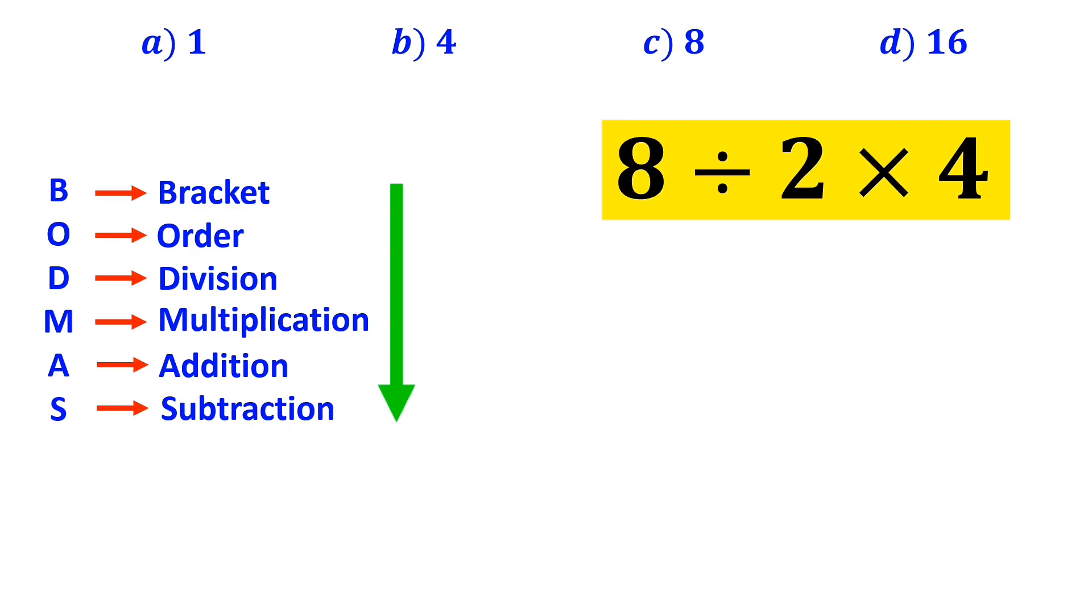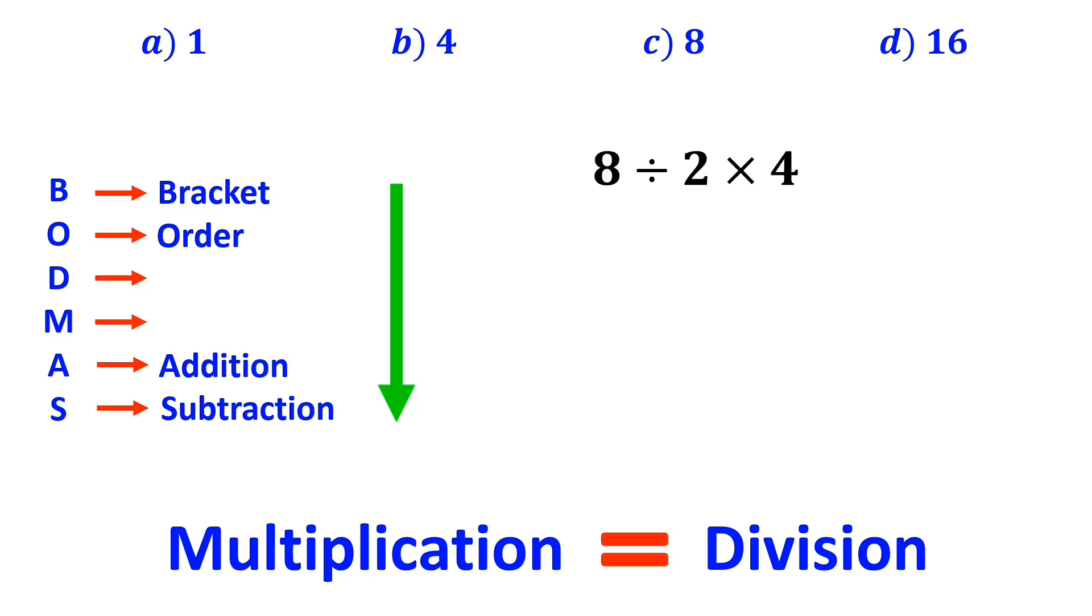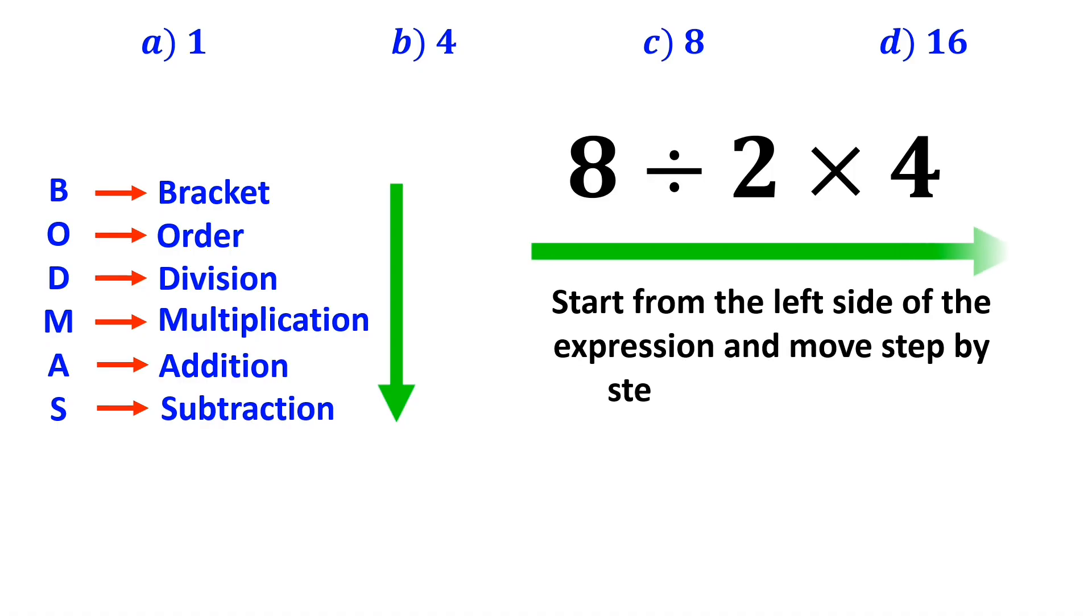It's very important to note that in the BODMAS rule, multiplication and division have exactly the same level of priority. In this case, all we need to do is to start from the left side of the expression and move step by step toward the right.